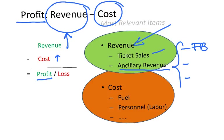This ancillary revenue could be up to 20–25% for some low-cost airlines, so it is a very important item. Another important ingredient for airlines to make profit is managing cost — they should maximize revenue and they should minimize cost. So what are the most important cost items?